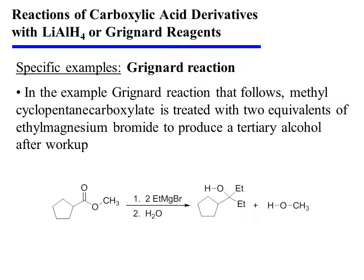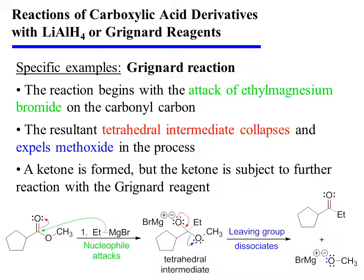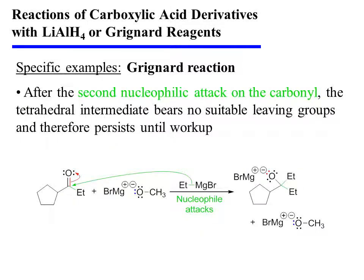On this slide, we see the same substrate, methyl cyclopentane carboxylate, being treated with two equivalents of ethylmagnesium bromide to produce a tertiary alcohol after workup. The reaction begins with the attack of ethylmagnesium bromide on the carbonyl carbon. As pi electrons are displaced onto oxygen, a tetrahedral intermediate is formed, but it subsequently collapses and expels methoxide in the process. A ketone is formed, but this ketone is subject to further reaction with the Grignard reagent. A second equivalent of ethylmagnesium bromide attacks the ketone carbonyl carbon, again displacing pi electrons onto oxygen. The tetrahedral species bears no good leaving groups and persists until workup.